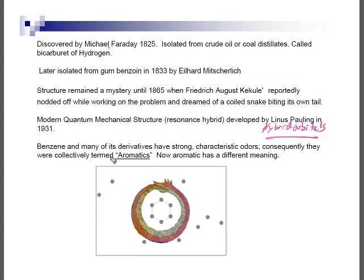Benzene and some of its derivatives have a strong characteristic odor. Many were originally isolated from plants and had these odors, so they were referred to as aromatic. This is actually a misnomer — not all aromatic compounds have a pronounced odor. Many do not, but the name stuck. Aromatic now means something completely different chemically, which we'll discuss later.